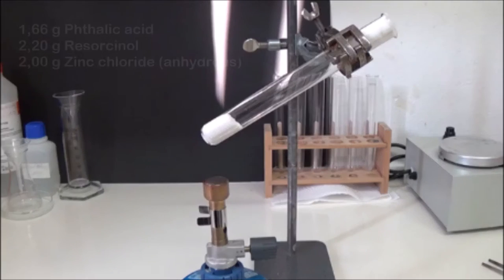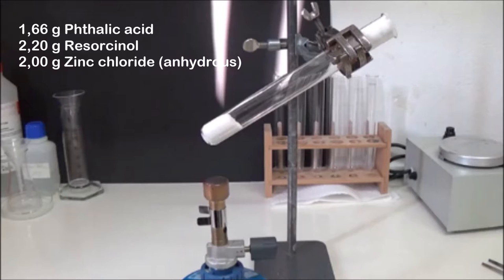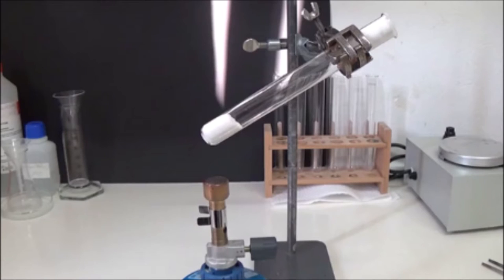Before starting, 1.66 g of phthalic acid, 2.2 g of resorcinol and 2 g of anhydrous zinc chloride were weighed out, ground thoroughly in a mortar and filled into a test tube. The zinc chloride serves as a catalyst and dehydrating agent.